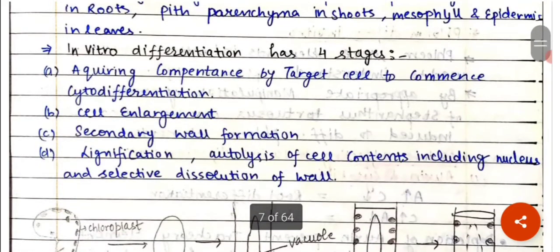In vitro differentiation has four stages. The first one is acquiring the competence by target cell to commence the cytodifferentiation. Second is the cell enlargement.